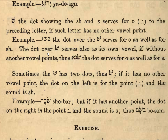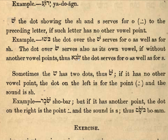The dot over the Shin can also work as its own vowel if there are no other vowel points. For example, we can't have a letter at the start of a word without a vowel, so: S-O-N-E. The dot serves for both the S and the O, with an invisible vav between the S and the N.